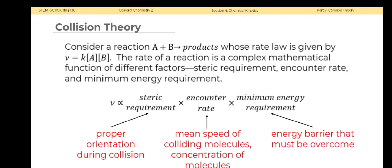The encounter rate is a function of the mean speed of A and B molecules and concentration of these molecules. The third factor, minimum energy requirement, is an exponential function of the energy barrier that must be overcome for a reaction to occur.